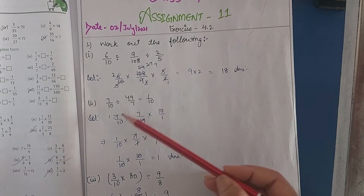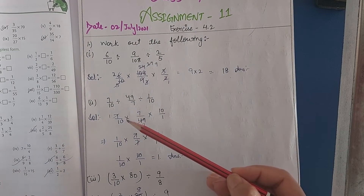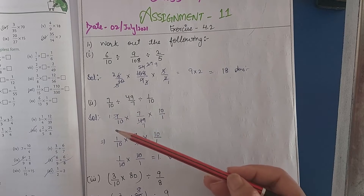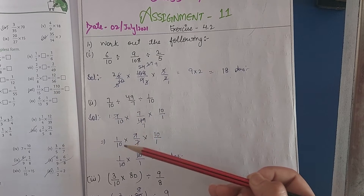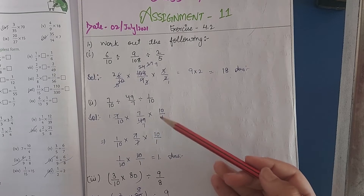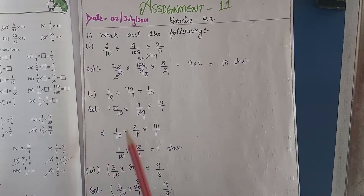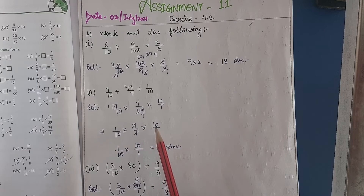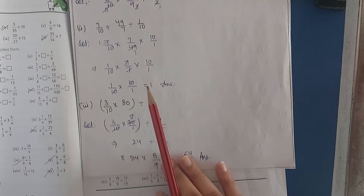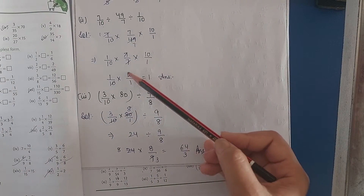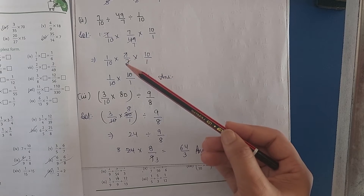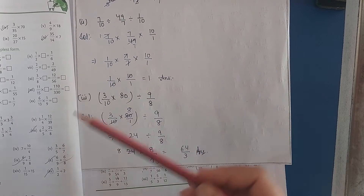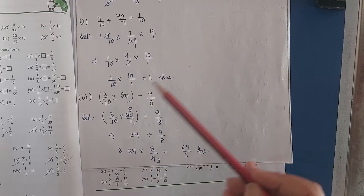Simply, what we will do is convert division into multiplication, then take the reciprocal: 7/10 multiplied by 7/49, multiplied by 10/1. Firstly, 7×1 is 7, 7×7 is 49. So then 1/10 multiplied by 7/7, multiplied by 10/1. Then 7×1 is 7, 7×1 is 7, so that is 1. That is 1/10 multiplied by 10/1. Simply cancel out 10 with 10, that is 1.